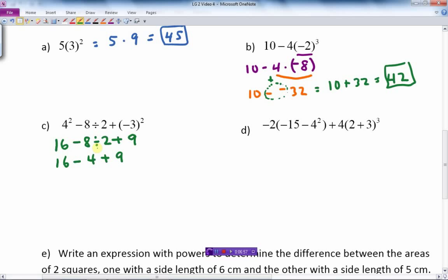I start from the left and work to the right. 16 minus 4 is 12, and 12 plus 9 is 21. There's the next problem finished.